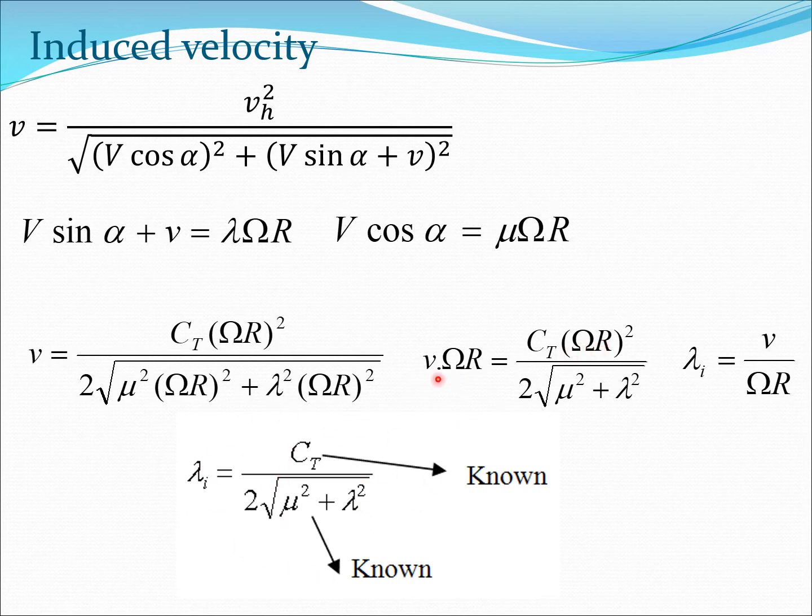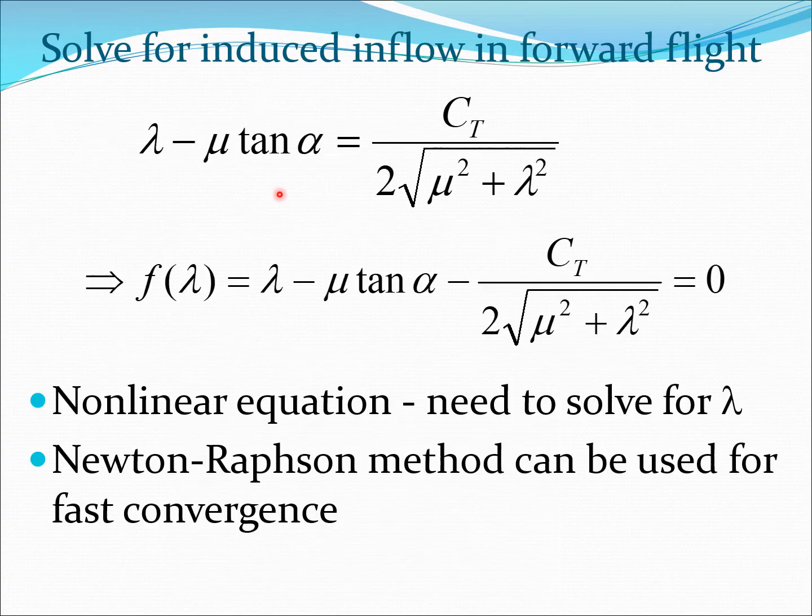From this I can get immediately lambda i is going to be this term. I bring the rotation speed below this here and so this becomes lambda i and I get a completely clean term in terms of ct to root mu squared plus lambda squared. When you are in forward flight, ct is known. That's the thrust coefficient. Mu is known from your forward speed. Therefore, you can calculate this. Just remember lambda i can be expressed in terms of lambda. From our previous discussion, we know lambda i was lambda minus mu tan of this angle. Therefore, I can write this as the equation.